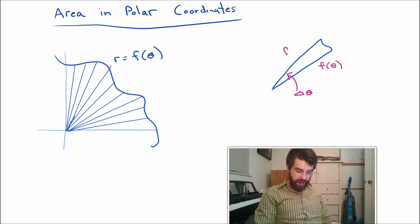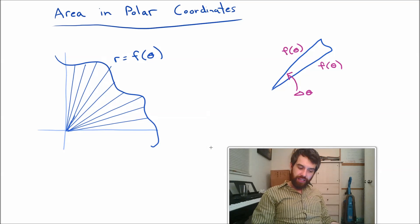Then I'll note that the length of my spokes are going to be F of theta. And as long as I assume that my delta theta is really small, then I may as well just say that both of the two different spokes are approximately the same length. It's a little bit of an approximation, but it's an okay one.